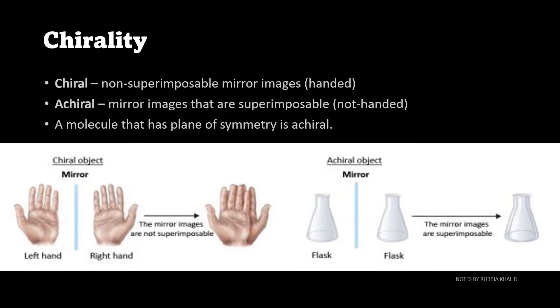Next, we have chirality. A molecule can be chiral or achiral. Chiral molecules are non-superimposable and they are mirror images of each other. We say they are handed. If you put your left hand on your right hand, they are not superimposable on each other, so they are chiral objects.